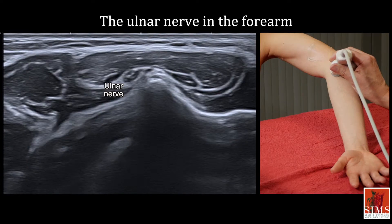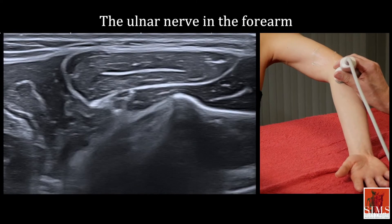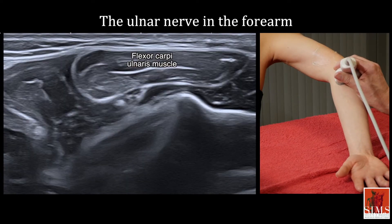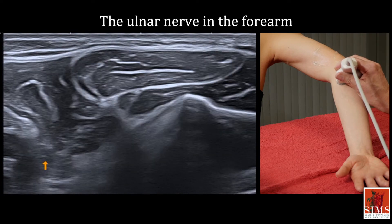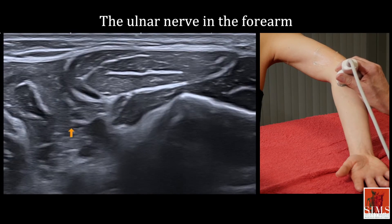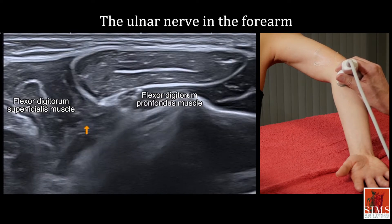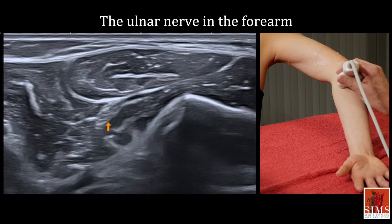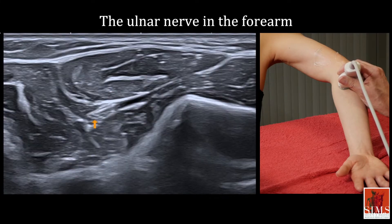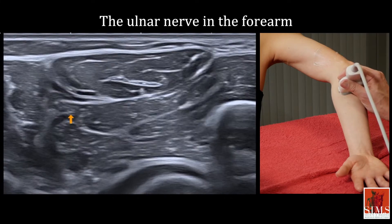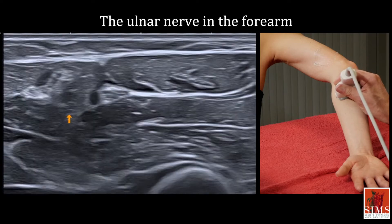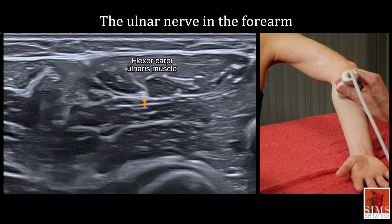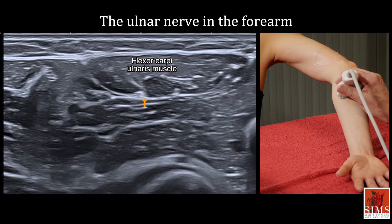The ulnar nerve then runs to the forearm between the two heads of the flexor carpi ulnaris, coming into contact with the flexor digitorum profundus. At this point it splits into motor branches that can sometimes be studied, such as the small motor branch for the flexor carpi ulnaris seen here.